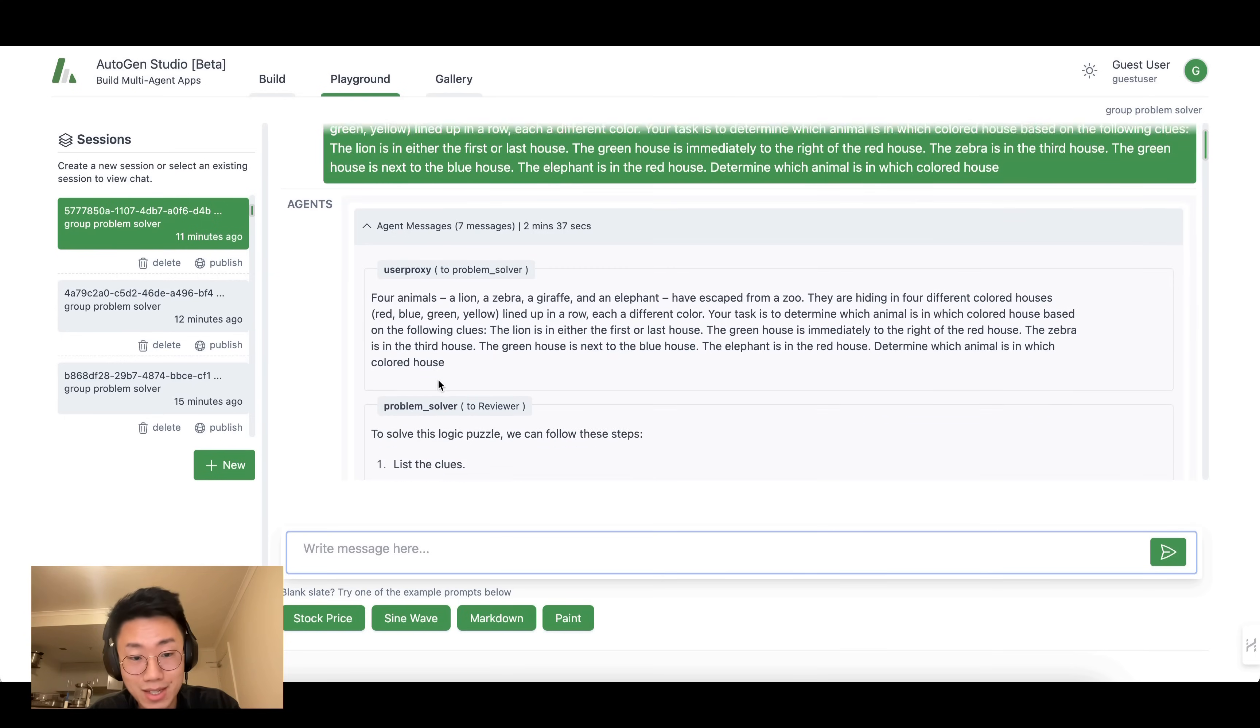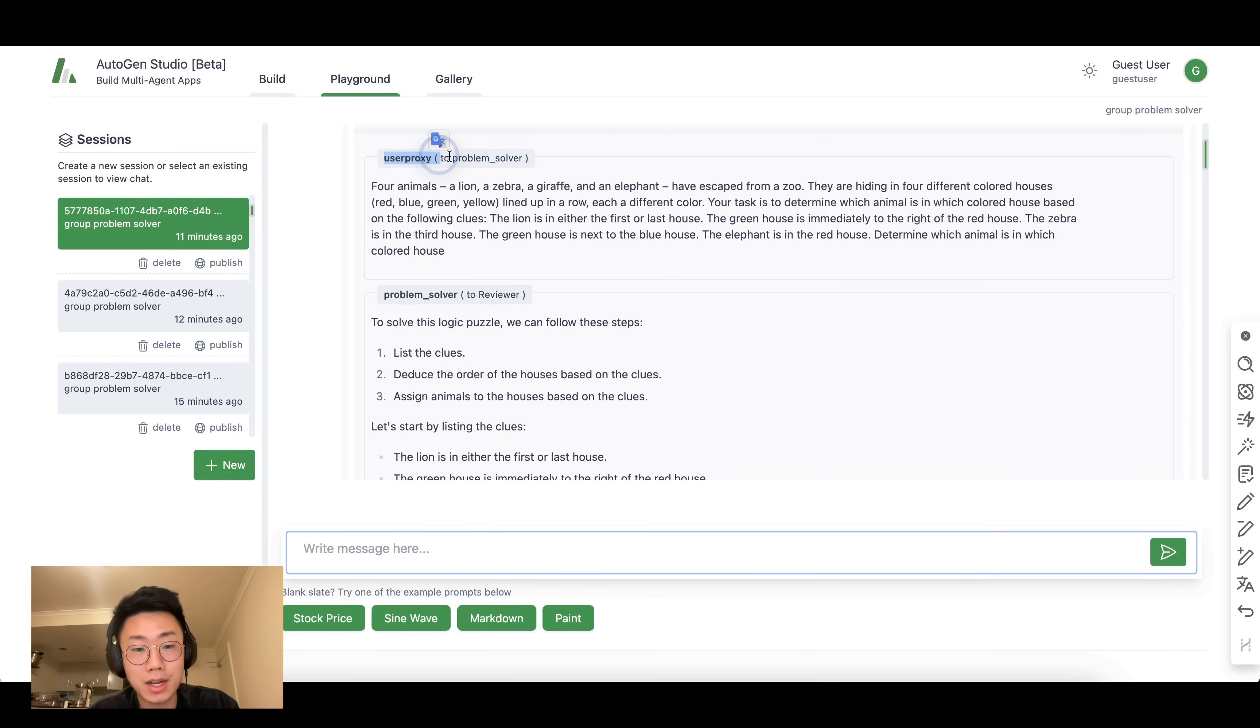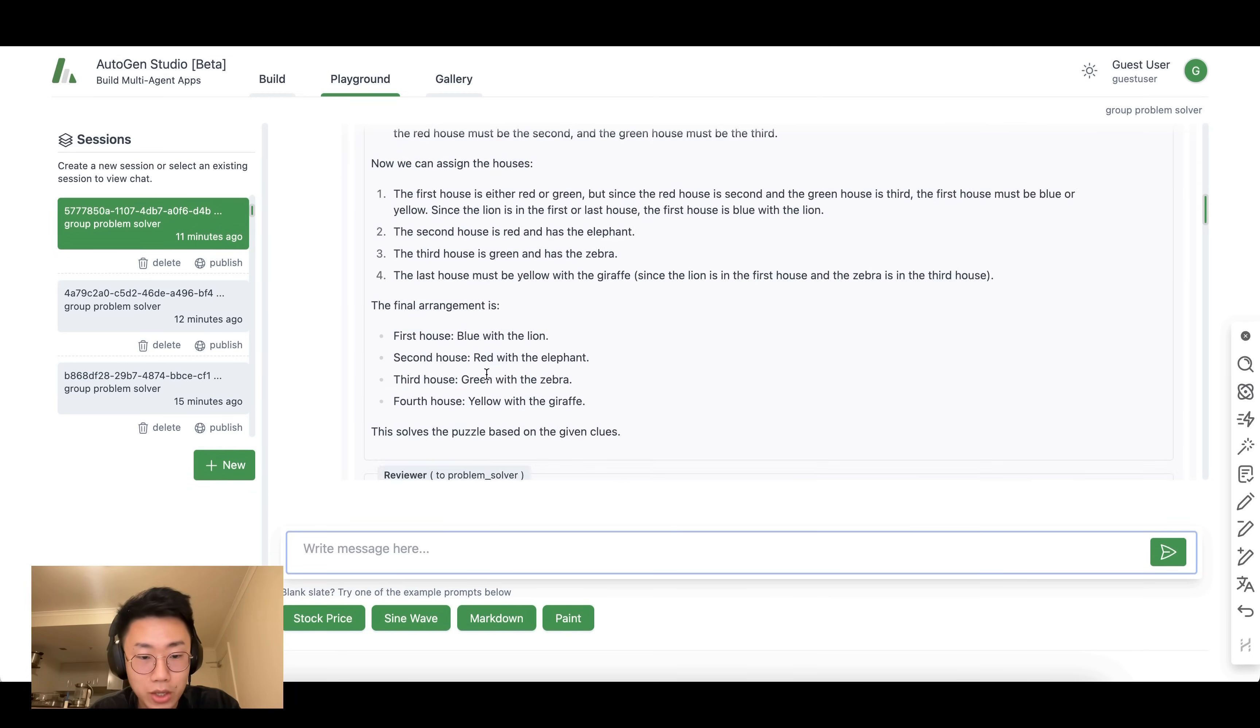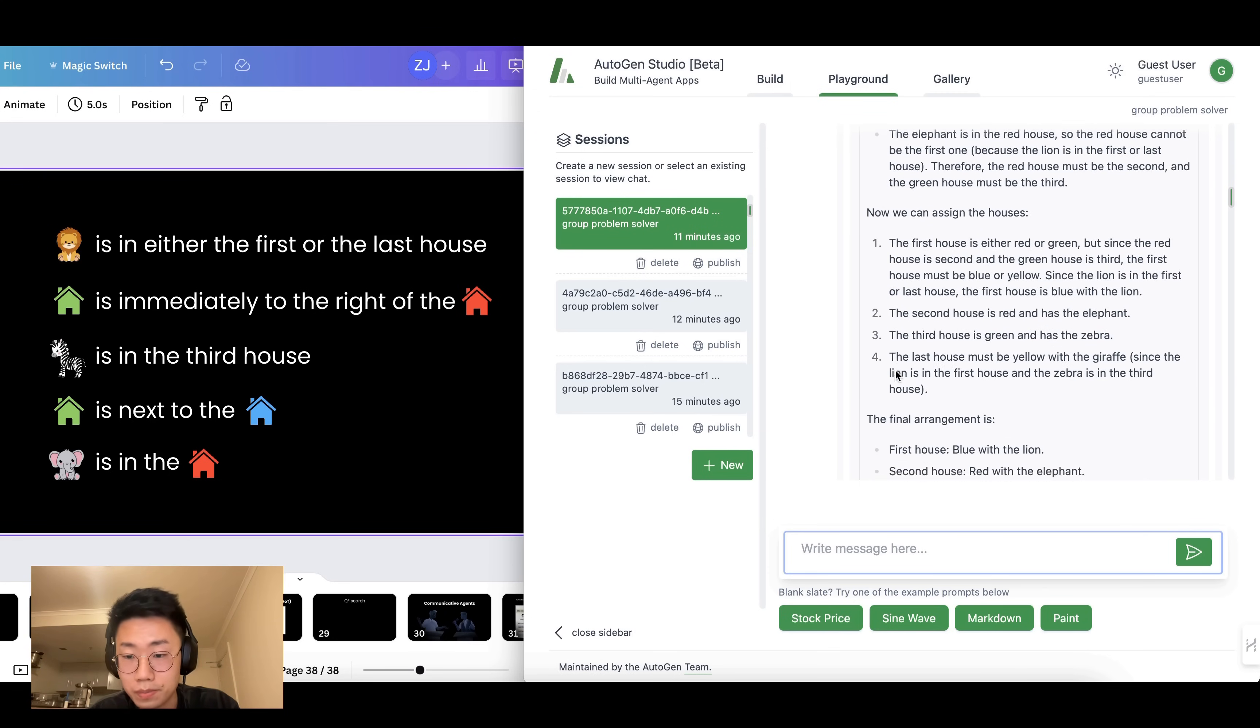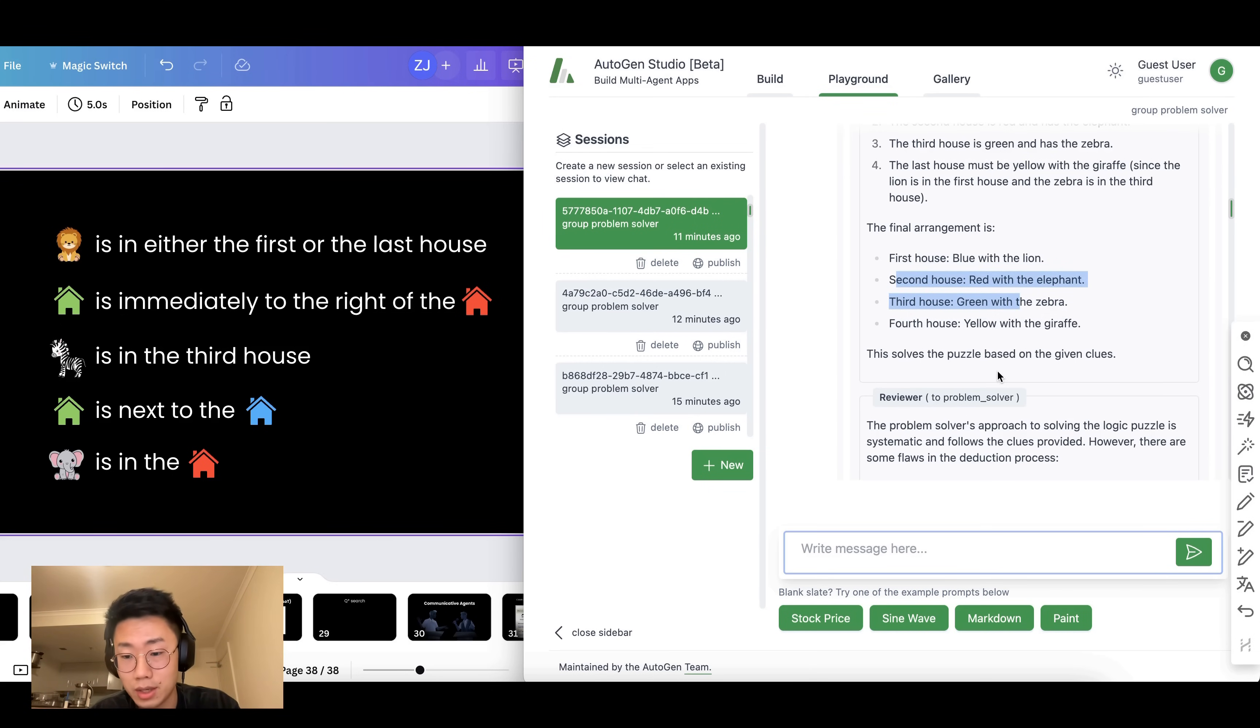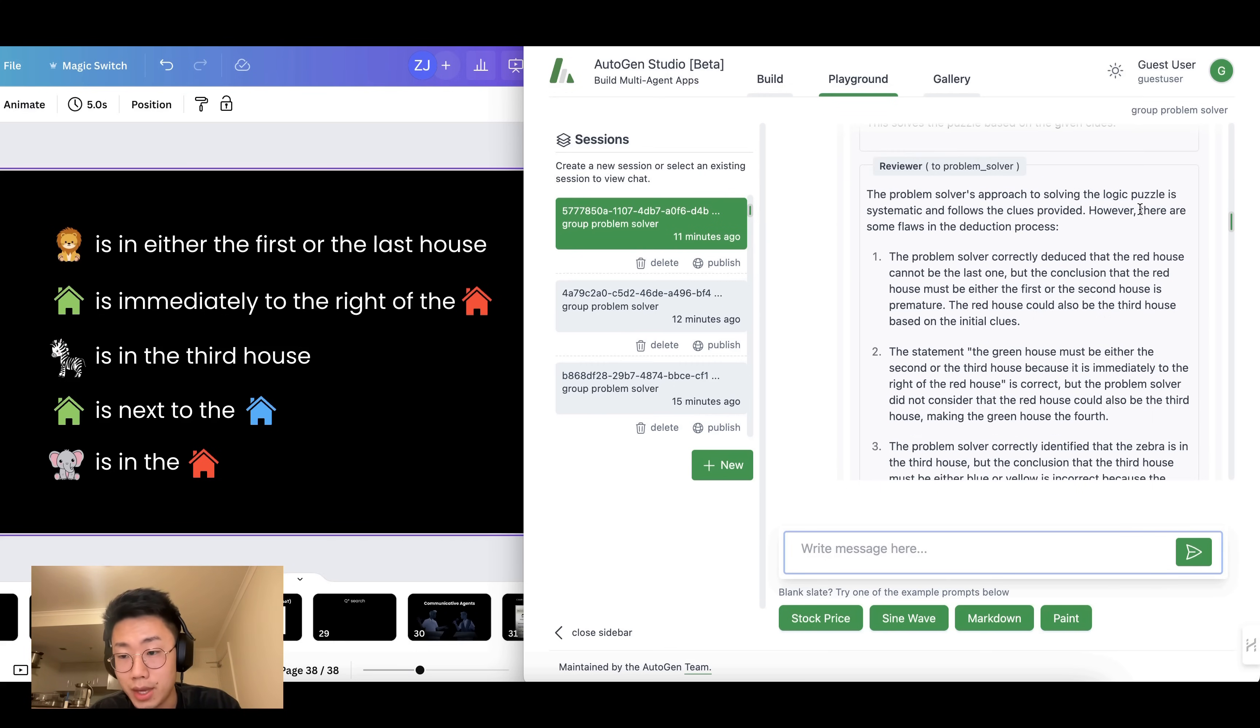OK, we got response back. We can see the detailed chat history. At the beginning, the user proxy agent gave the task to problem solver where the problem solver tried to think step by step and generate the initial answer. And let's compare it with the actual criteria. So the lion is on the first or last, which is correct. The green should be immediately to the right of the red house, which is not correct here. So the initial answer is incorrect. But the good thing is that the reviewer actually reviewed the results and pointed out that there are a few flaws in the deduction process.